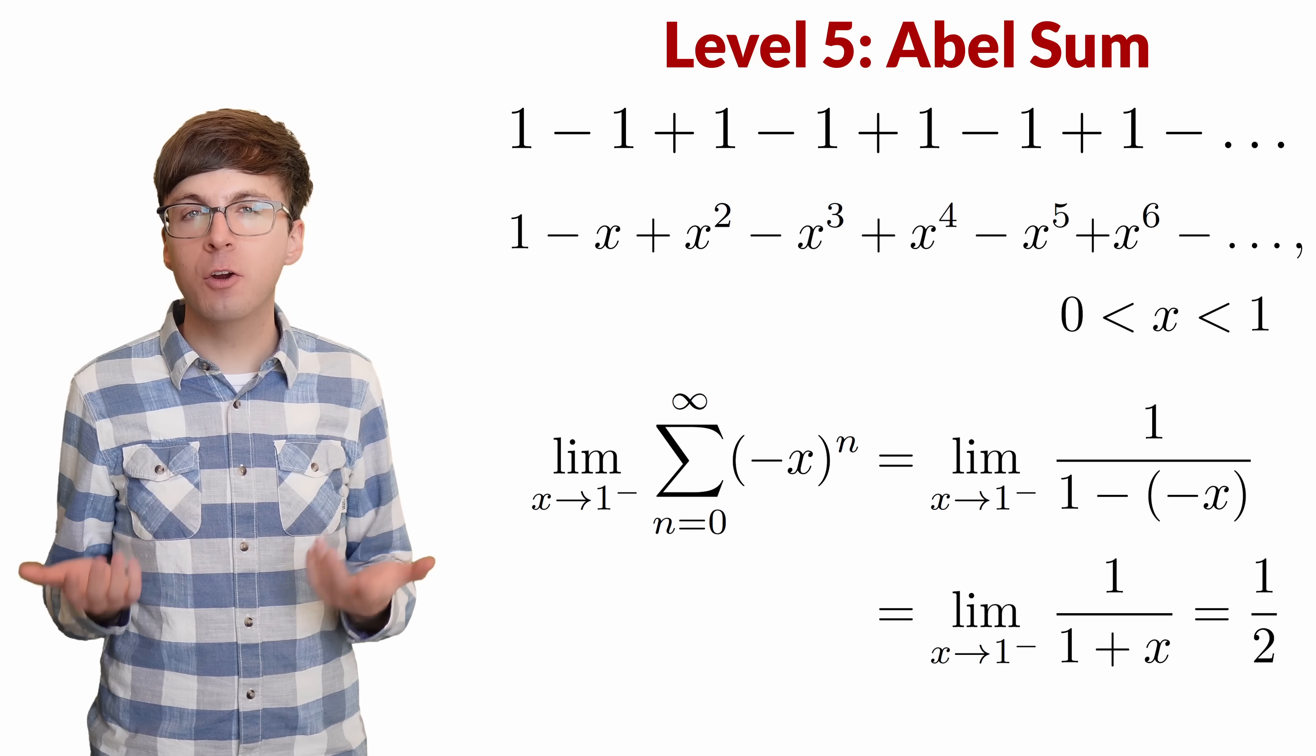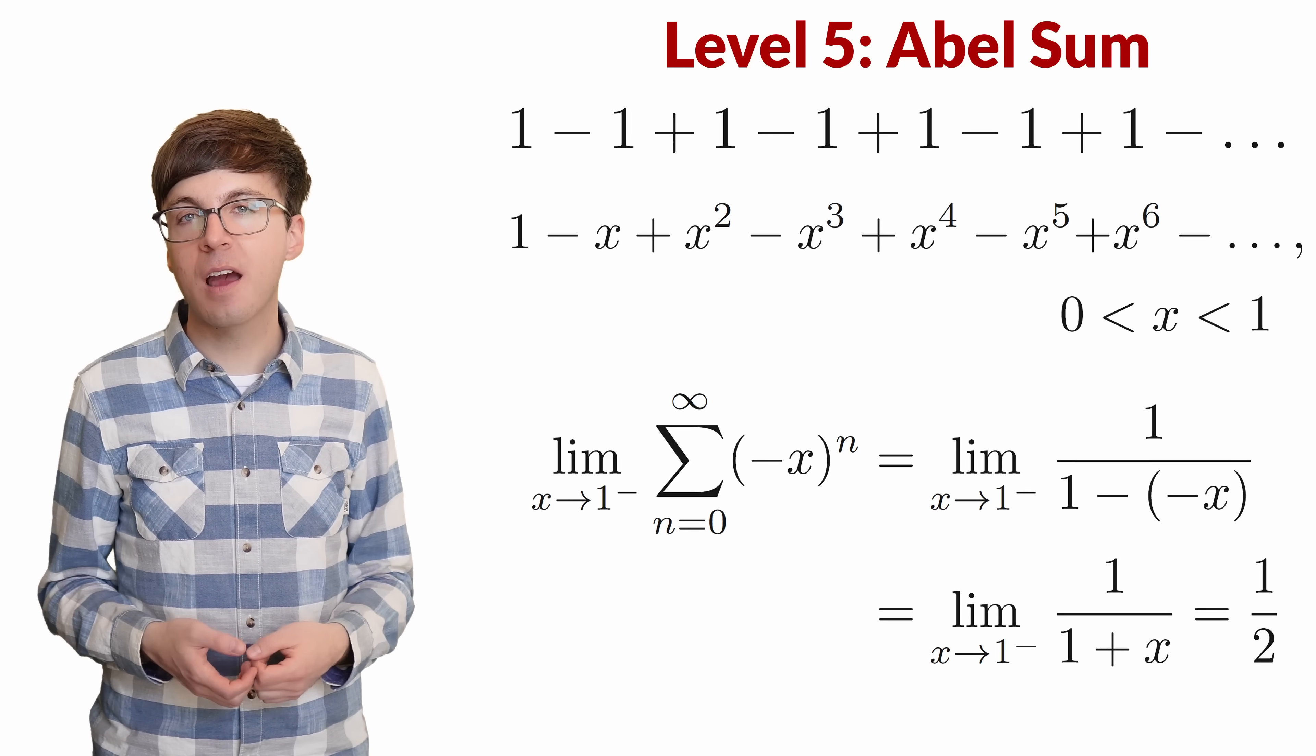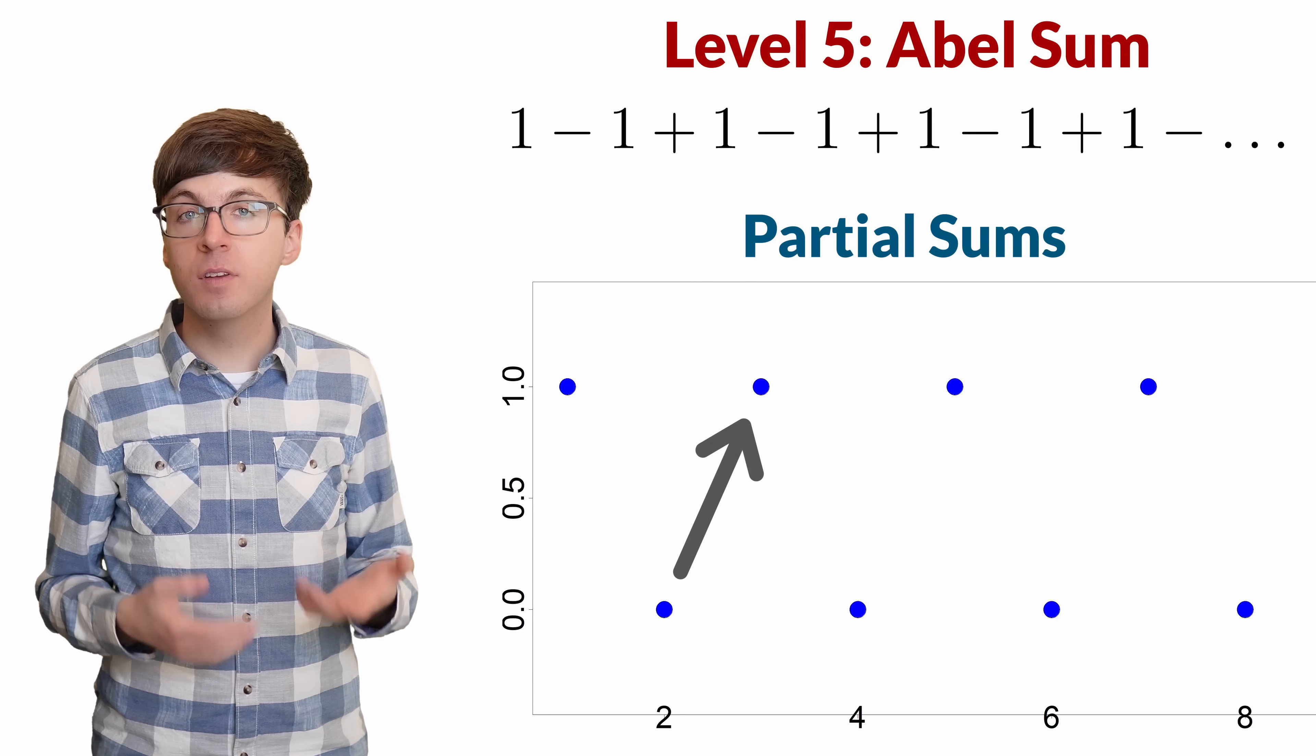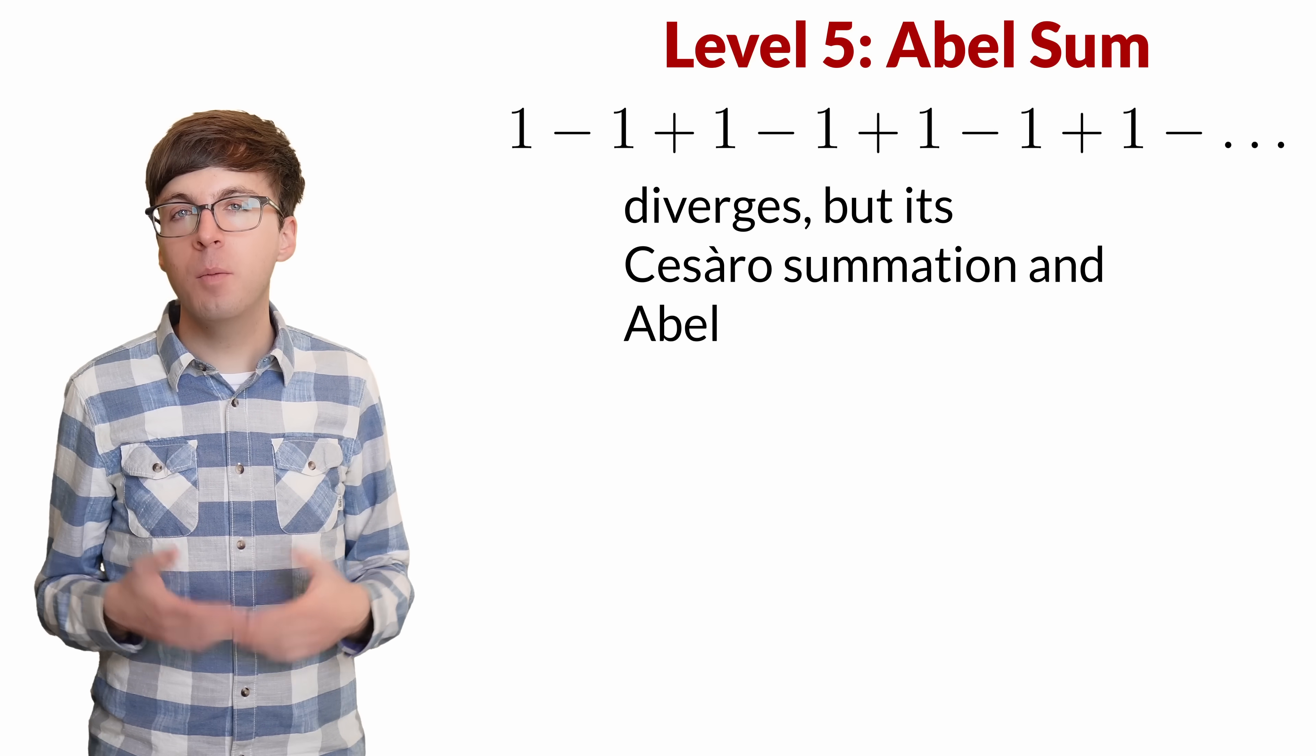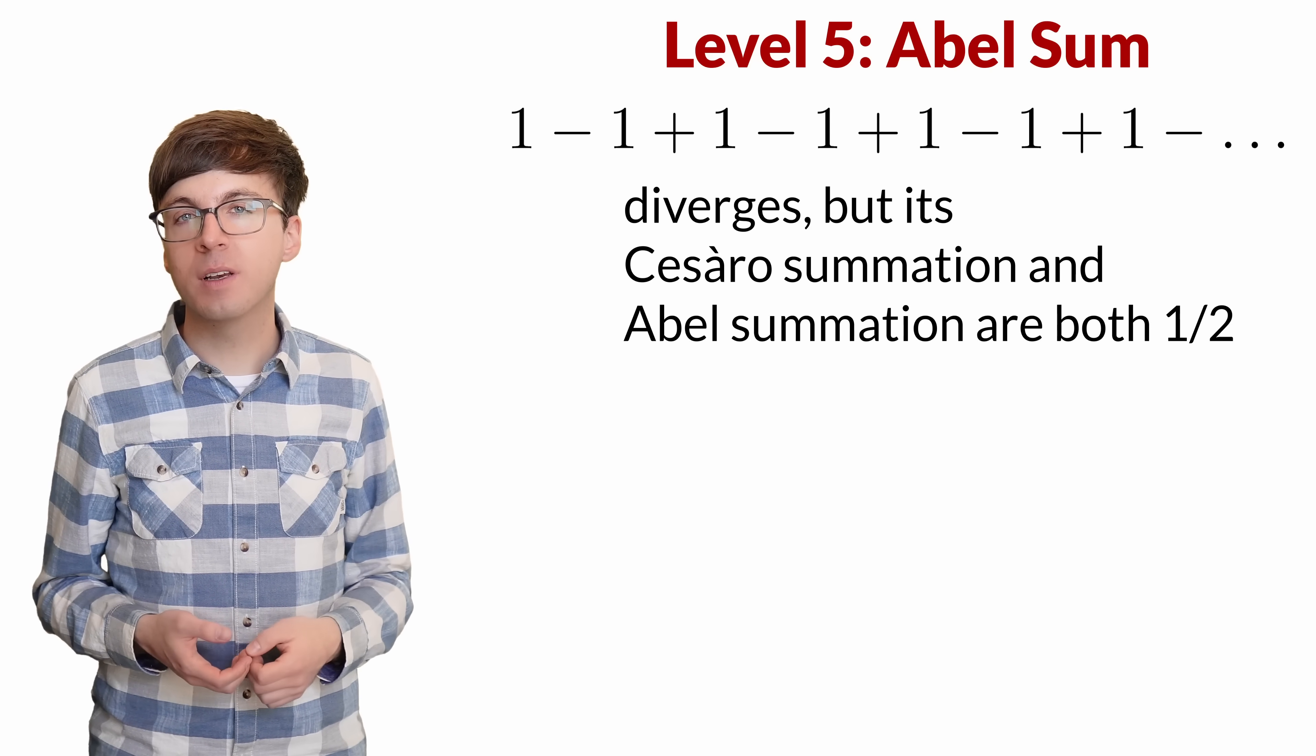The Abel summation agrees with the Cesaro summation and gives the value as 1 half. Now we have a pretty complete picture of this series. It diverges since the partial sums don't converge, so the sum does not exist. But we can find the Cesaro summation or the Abel summation, which are both equal to 1 half.